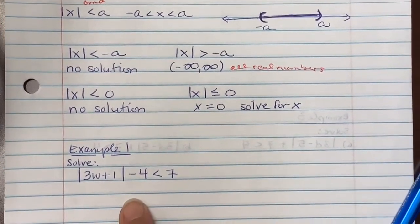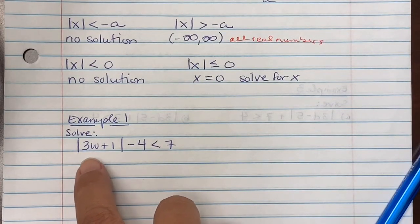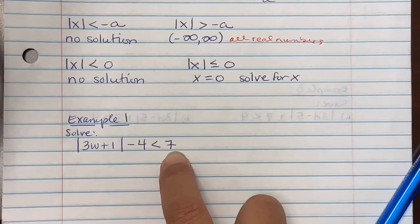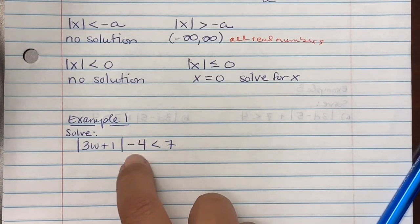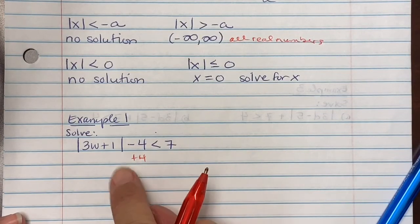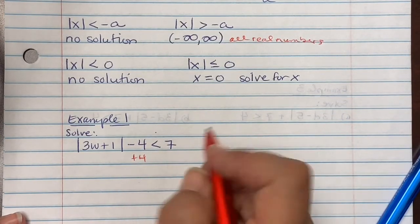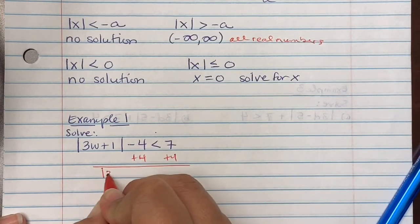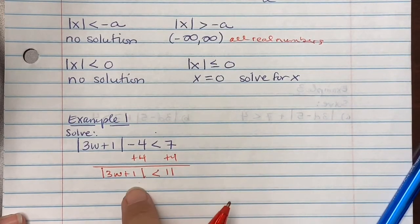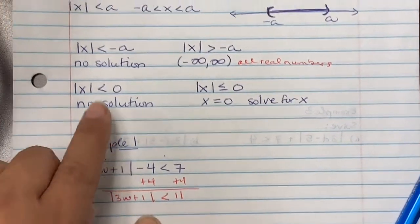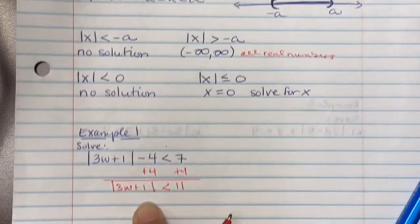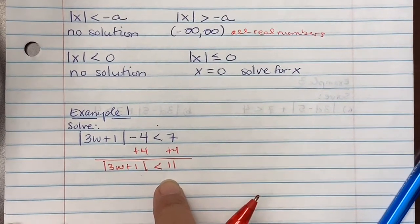Example one: solve absolute value of 3w plus 1 minus 4, less than 7. Going back to the previous lesson, we need to isolate the absolute value. So we move the negative four by adding four to both sides, giving us absolute value of 3w plus 1 less than 11. This is the scenario of absolute value less than a positive value, so we can solve it.